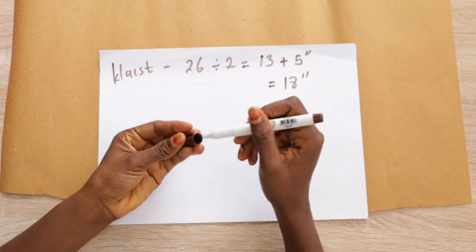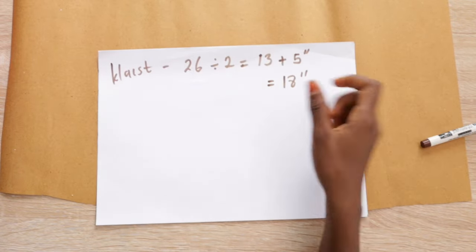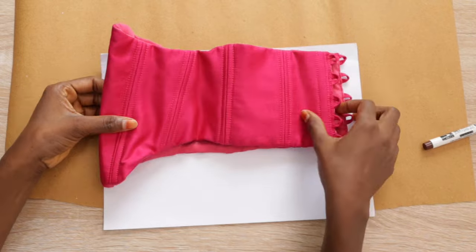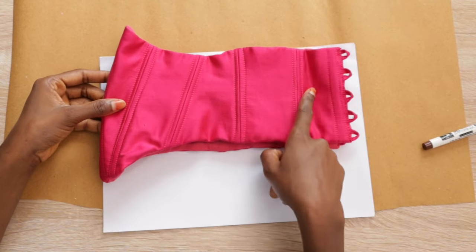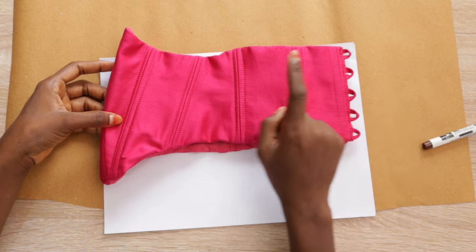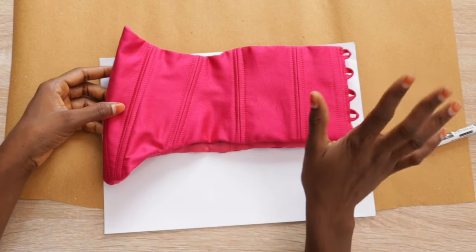The reason I'm adding 5 inches is because I'm gonna divide the panels into 5, so I'm gonna have 1, 2, 3, 4, 5. Each one has to have 1 inch seam allowance and that's why I'm adding 5 inch seam allowance.